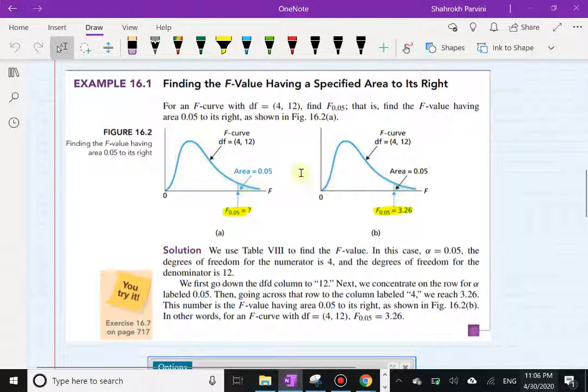Now there is a table in the back of the book, Table 8. If you're interested you can go figure it out on your own. But again, I'm not interested in that table. It's not a complete table anyhow. So we're going to rely on StatCrunch.